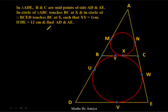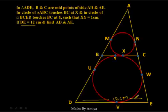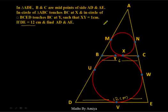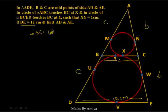Now it's time to apply these concepts in a question. The first data: base DE = 12 cm. By the midpoint theorem, BC = 6 cm. There is an incircle in quadrilateral BCED, so the sum of opposite sides is equal. Labeling sides as B and C, opposite side sum: B + C = 12 + 6 = 18. Next, we use XY = 1 cm.